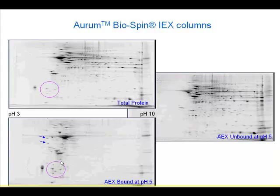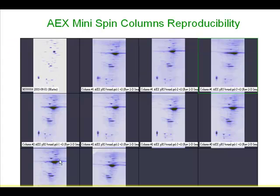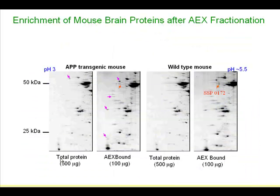The other part is enriched in the unbound fraction. I tested how reproducible this is — I got technical replication of three columns per sample and found really nice reproducibility. I then enriched the acidic proteins from Alzheimer's mouse brain tissue versus control, and started to notice something new coming up that I cannot detect in the total protein run.